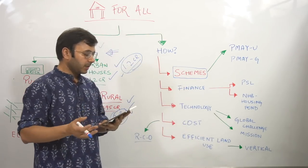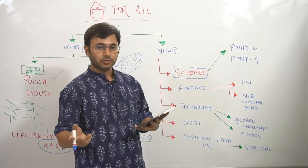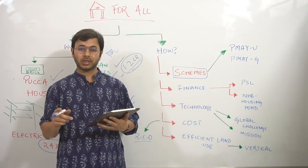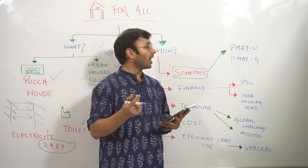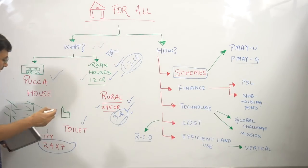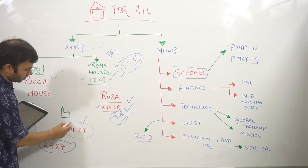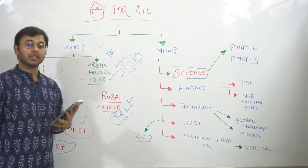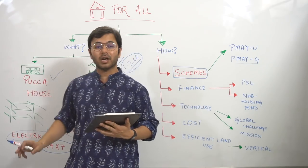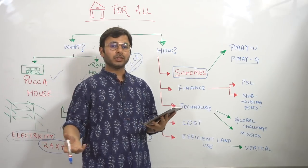But to summarize the basic objectives, basic targets for Gramin, which was launched in the year 2016 and lies under the Ministry of Housing. So interesting, it has now been converged with Swachh Bharat Mission and MGNREGA. Why? Why have we converged that?